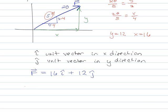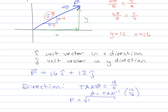And if you wanted to know the direction, so that I know the direction, I can just remember that my tangent of theta is opposite over adjacent, or Y over X. So I could say that theta is going to be equal to the inverse tan of 12 over 16. And if I really wanted the magnitude, then it's the square root of the sum of the squares, because it's the Pythagorean theorem.